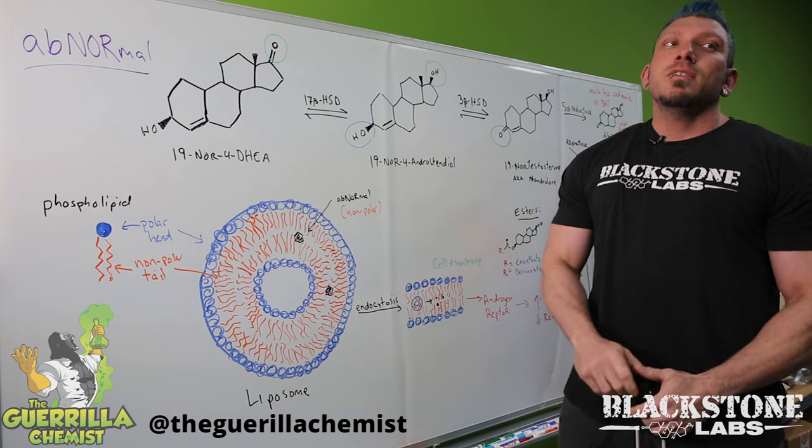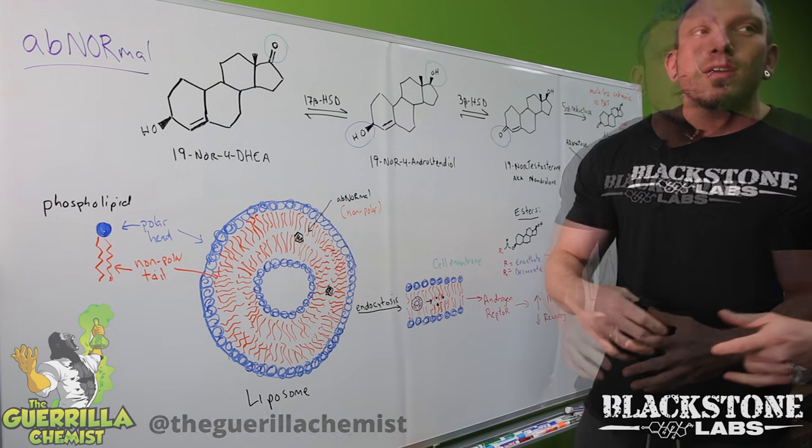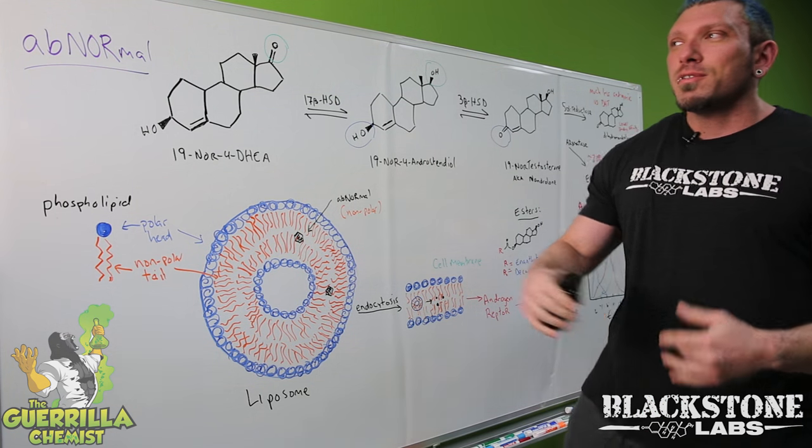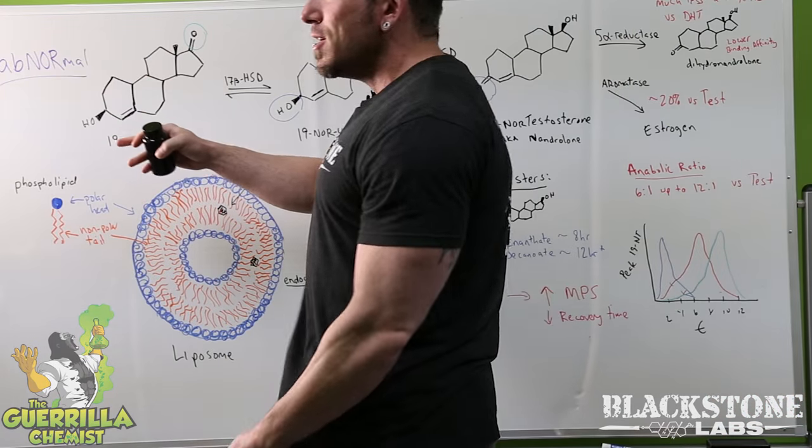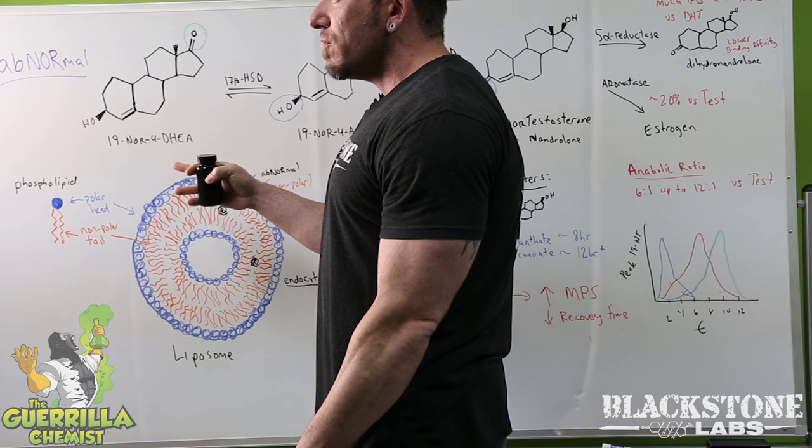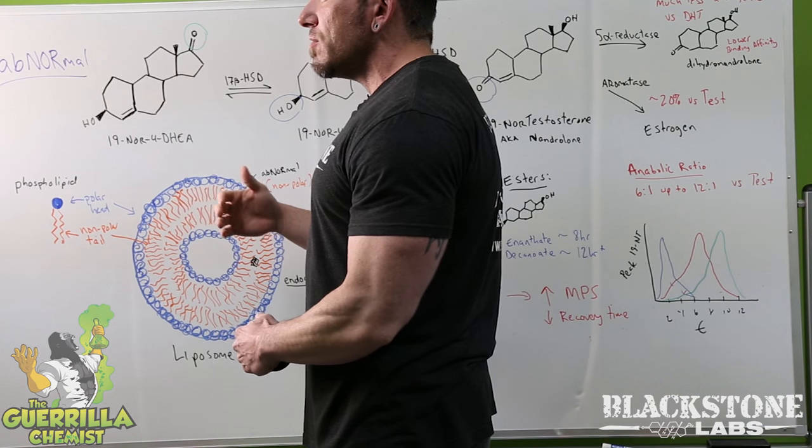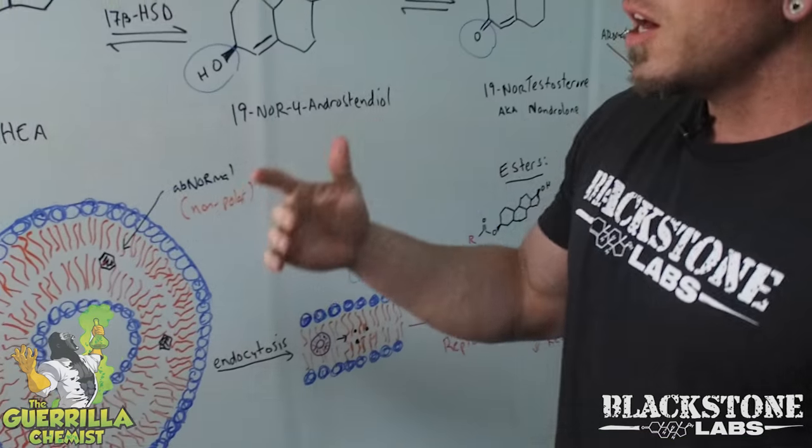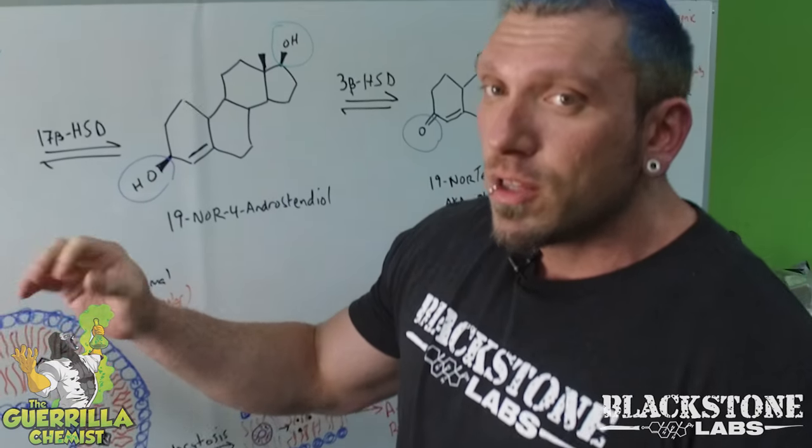What's up guys, it's Gorilla Chemist here, Chief Science Officer at Blackstone Labs, here to talk about our newest anabolic precursor, Abnormal. If you've seen my videos before, we talked about Chosen One and Brutal Force being DHEA derivatives that convert into an active androgen. This is kind of the same thing, only this one's slightly different and extremely potent.